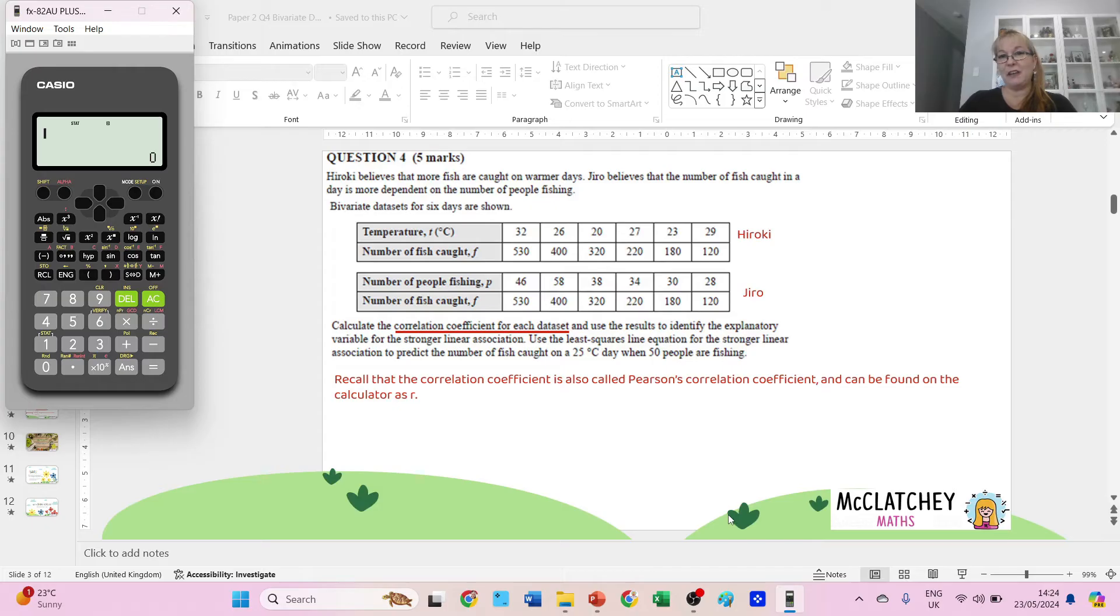I'm using the Casio calculator. It might be worth if you've got a different calculator watching a different video on how to use yours. I'm going to show you how to use this one for statistics. We're going to start by clicking on mode setup number two and tell it number two for bivariate data. Then we're going to start by entering Hiroki's information. So 32, 26, 20, 27, 23, 29. At this stage we should check we've got definitely six pieces of data there. We should also check our numbers if we wanted to.